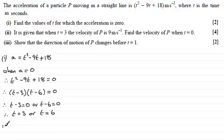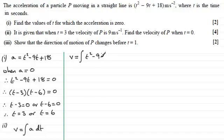Now in part two, it says it is given that when t equals 3 the velocity of P is 9 meters per second. Find the velocity of P when t equals 0. Well to get velocity, velocity is equal to the integral of acceleration with respect to time. So we've got the integral of our acceleration, that's t squared minus 9t plus 18.